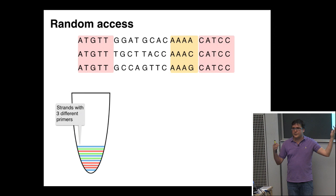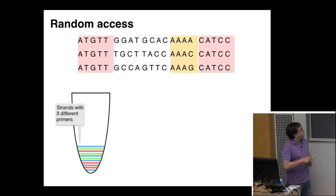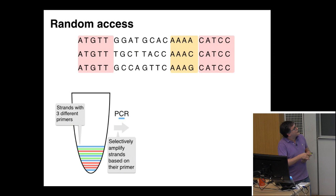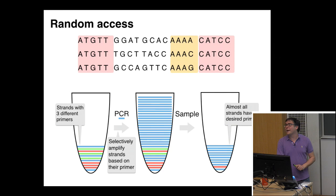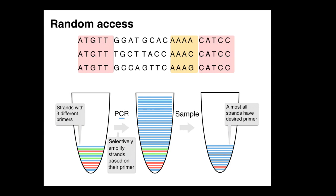For random access, nature has figured that out with PCR — polymerase chain reaction — which selectively amplifies some DNA molecules in the pool. If I want only the blue file from a test tube containing blue, green, and red files, I use the blue primers to selectively amplify only blue by a significant factor. Then I have a lot more blue than anything else, take another sample, and sequence that to get mostly blue. Reads are somewhat destructive, but this is archival storage where reads are the uncommon case.